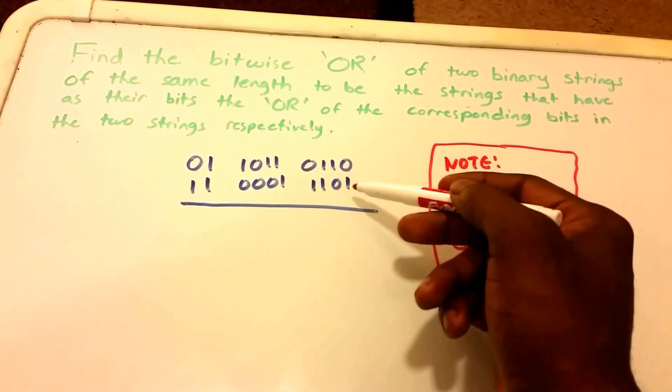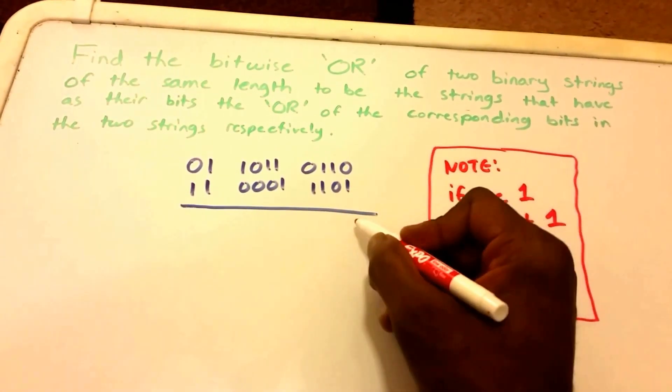So here we have 0, 1, so we see a 1, we put 1.